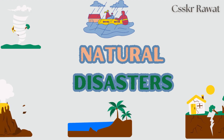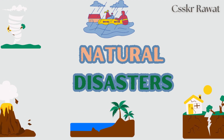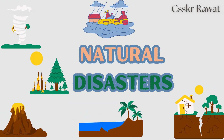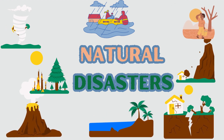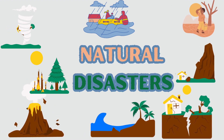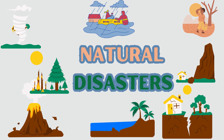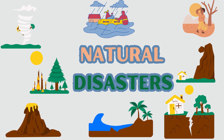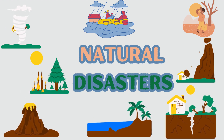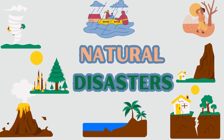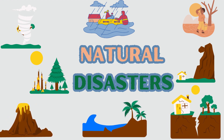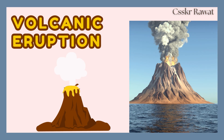Natural disasters. A natural disaster is a life-threatening incident produced by natural earth processes. These occurrences can cause considerable environmental damage, loss of life, and property damage. Let us see the list of natural disasters.